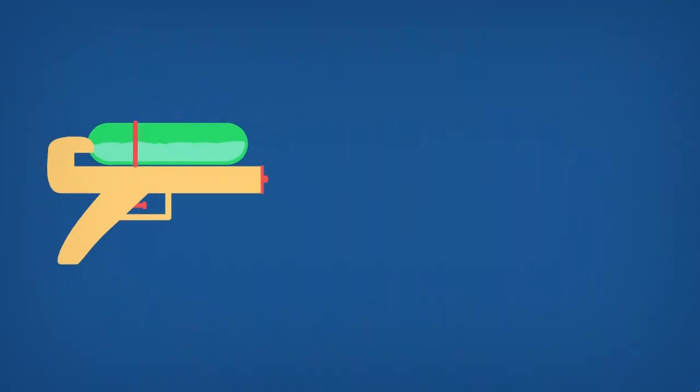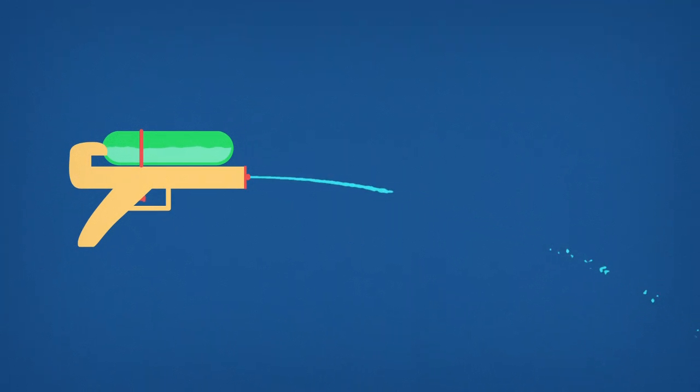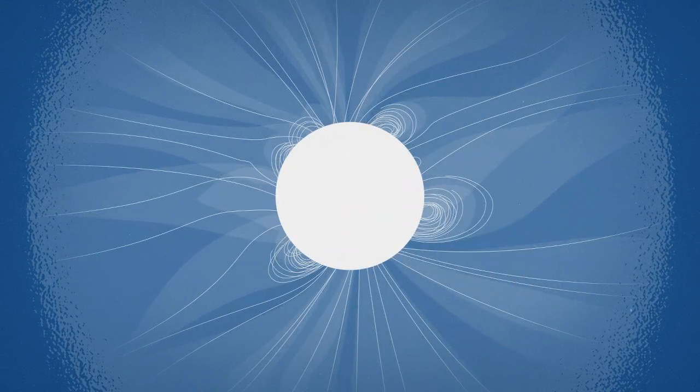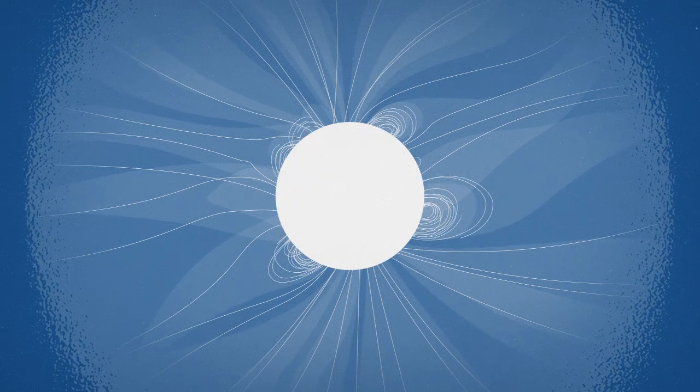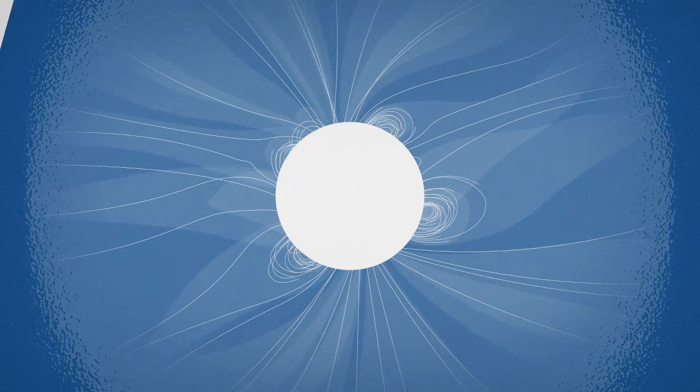Like water from a squirt gun, the plasma starts as a stream, but then breaks into drops. The farther out it goes, the weaker the Sun's magnetic control of the material, and the less clear its form becomes.